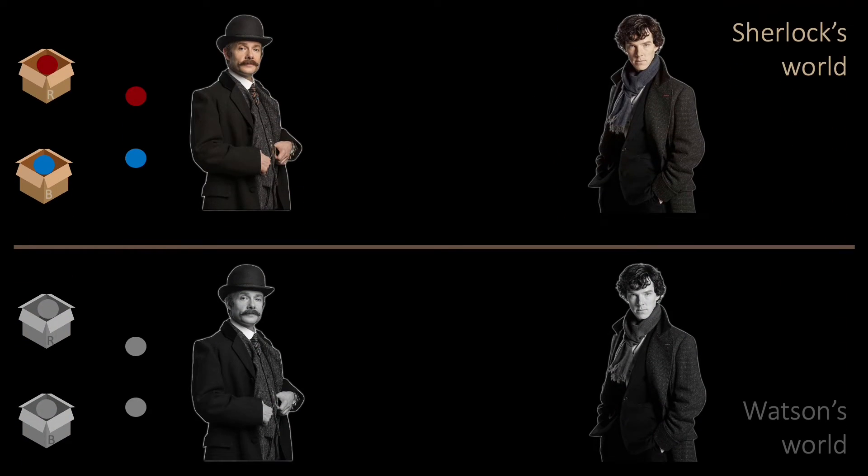Let us consider the case where Watson owns two other spheres that look exactly like Sherlock's. In addition, let us assume that Watson's spheres are secretly marked, so Watson knows which one is red and which one is blue.